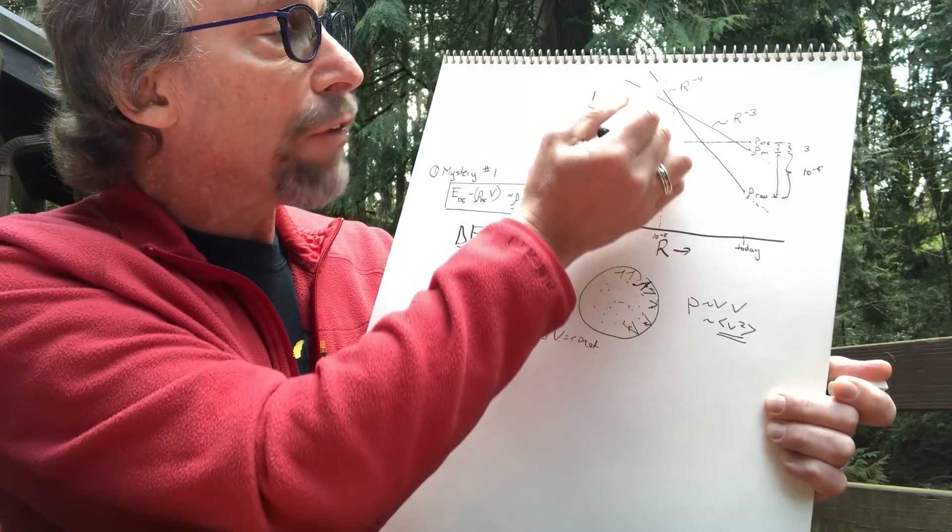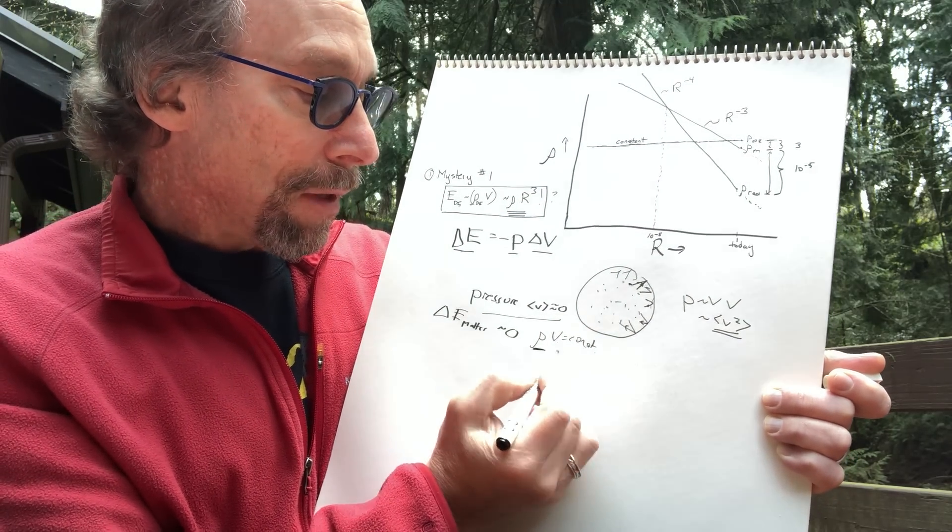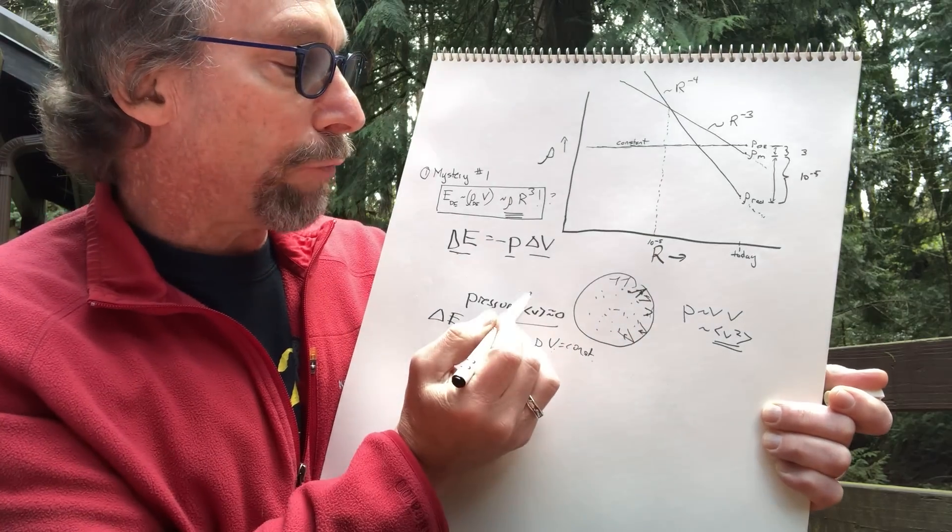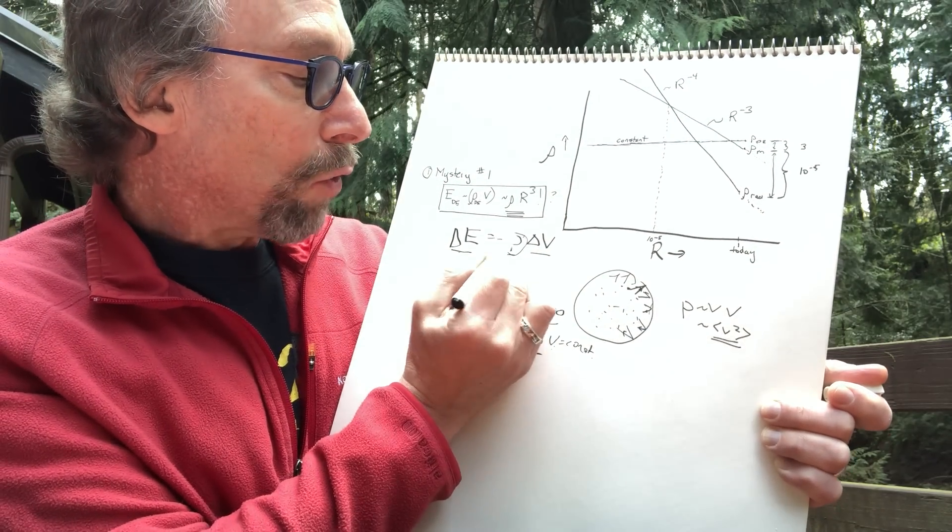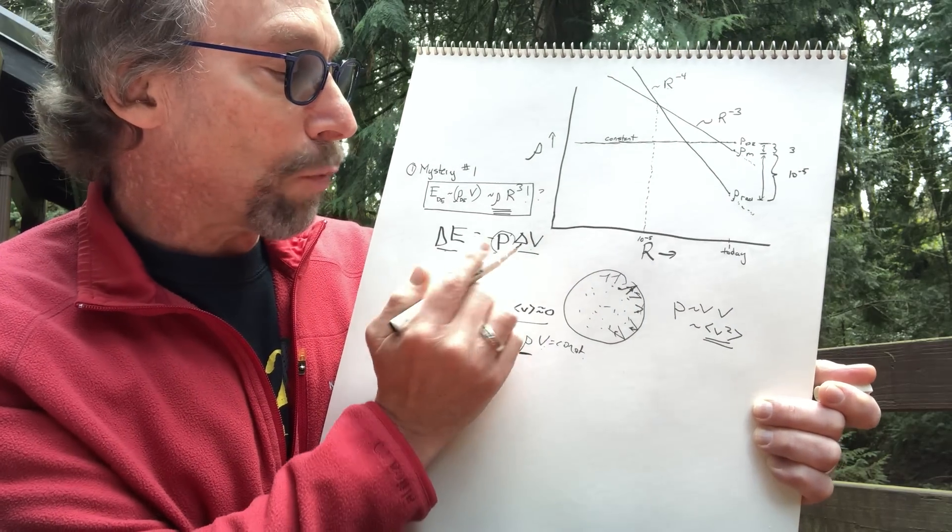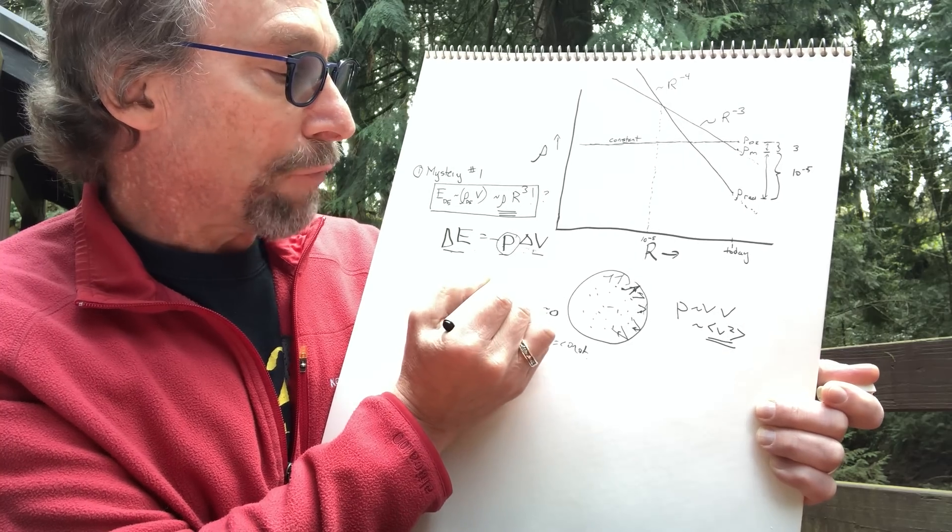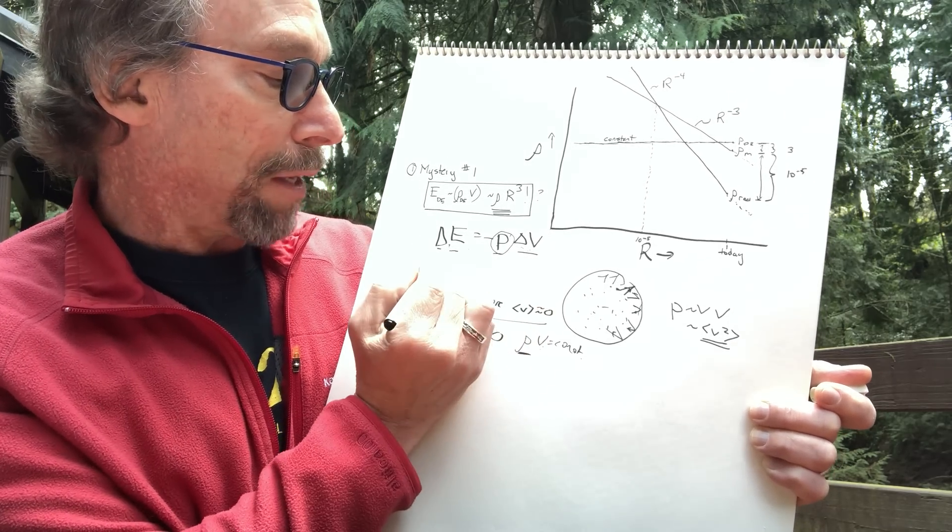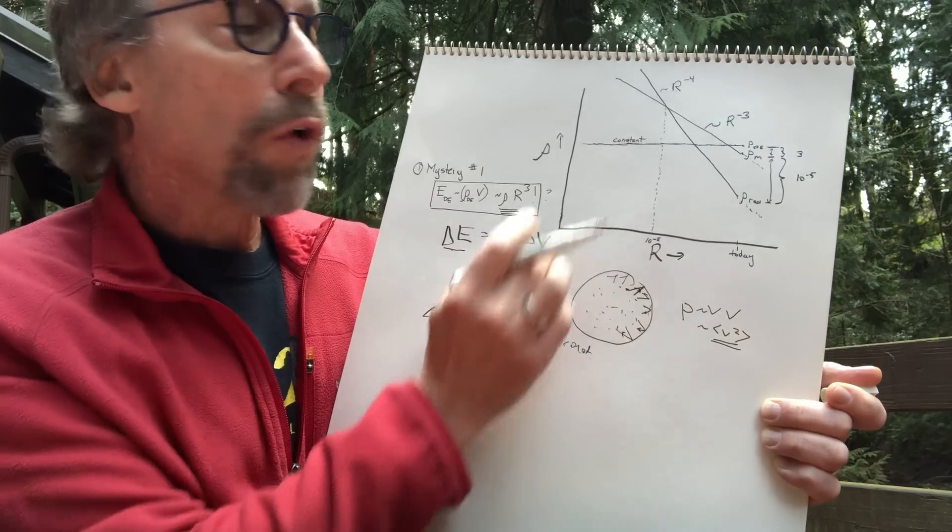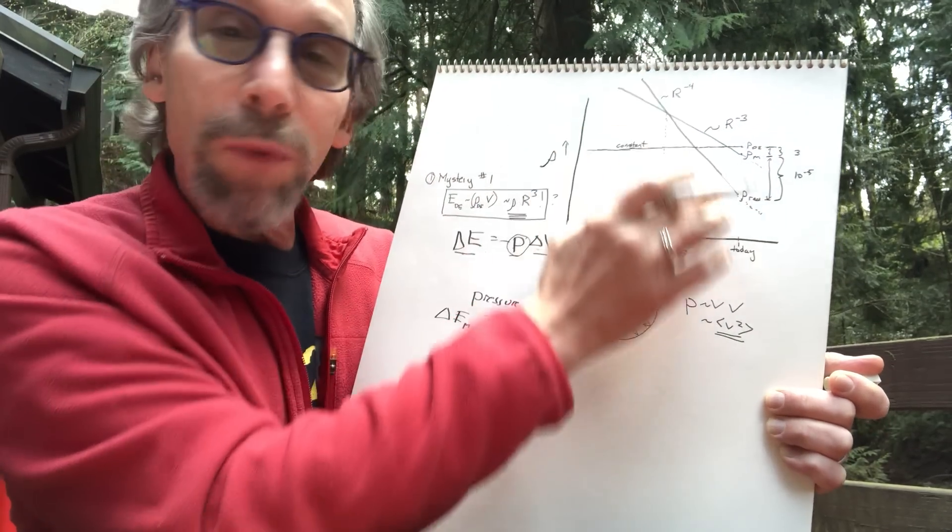And that explains why there's this extra power of r. Because the density of these things is going down not as one over r cubed, but one over r to the fourth. And that's because radiation is exerting a pressure on space as it causes it to expand. And the pressure is positive. And as the volume increases, this quantity is negative. The energy in any volume decreases. And that causes radiation to fall more quickly than matter due to its radiation pressure.